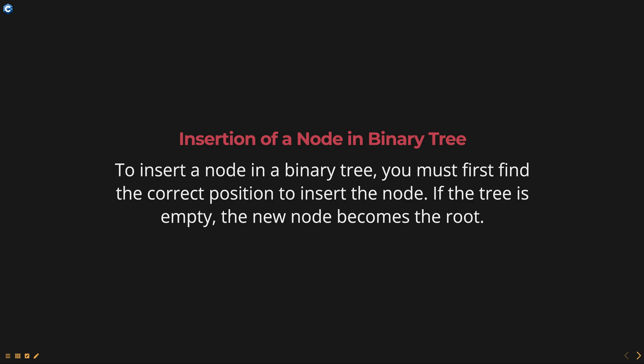If the value of the node to be inserted is greater than the value of the root, we move to the right subtree. If the right subtree is empty, we insert the node there. If the right subtree is not empty, we repeat the process until we find an empty position to insert the node.